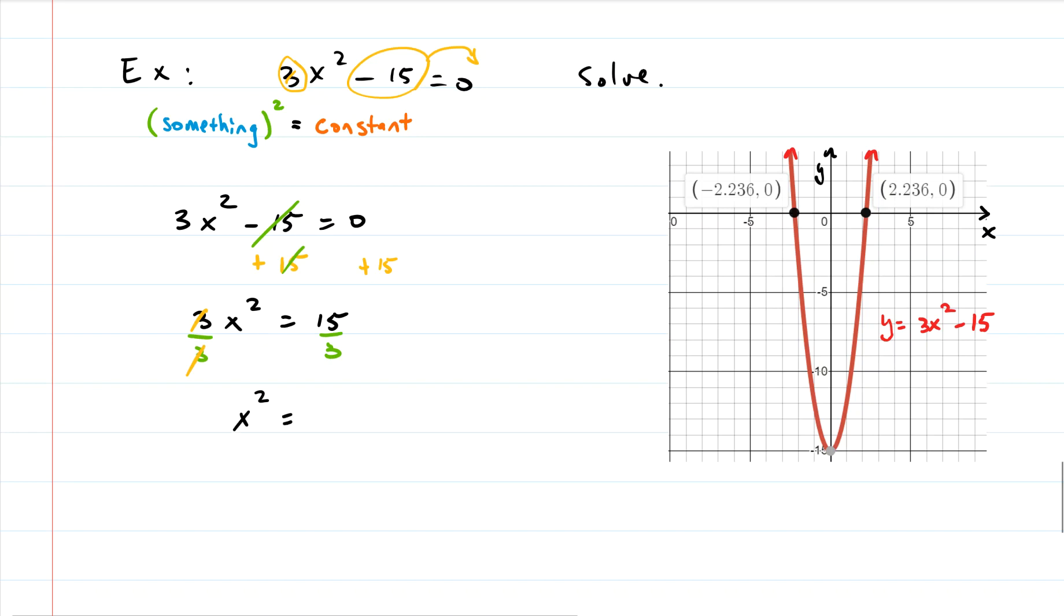And stuff goes away, so now we have x squared equals 15 divided by 3, which is 5. Now we are perfect. We have our something squared equals a constant, so we're set.